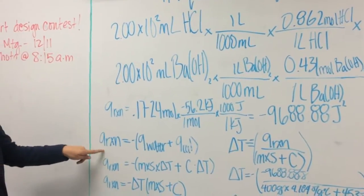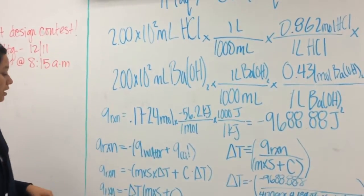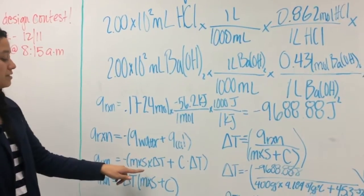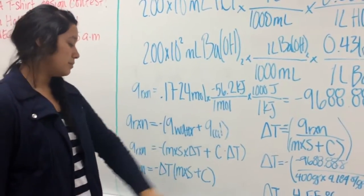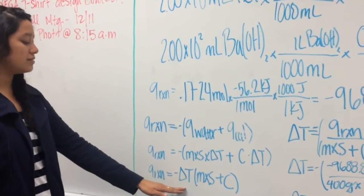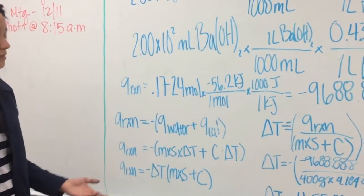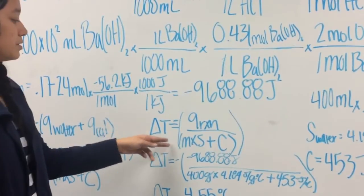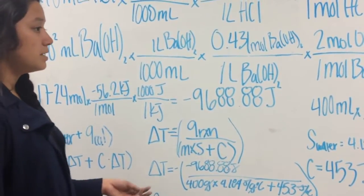We know that Q of reaction equals the negative of Q water plus Q calorimeter. Q of reaction also equals the negative of mass times specific heat times change in temperature, plus heat capacity times change in temperature. Since we're trying to find the final temperature, we factor out the change in temperature. Then we divide, giving us: change in temperature equals Q of reaction divided by mass times specific heat plus heat capacity.